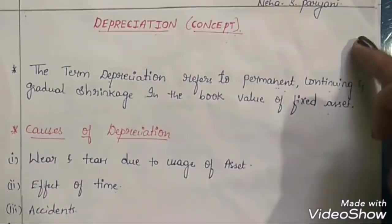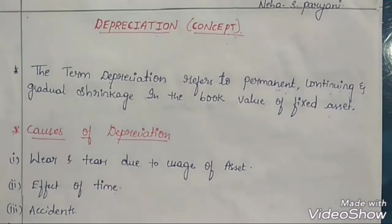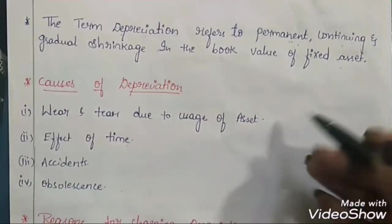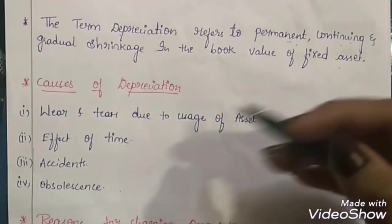Here we will discuss about depreciation. The question arises: what can be the causes for depreciation? The first is wear and tear due to usage of the asset. As we go on using the asset, there are many chances that the parts of the asset may get damaged, and due to that the value of the fixed asset will get reduced or depreciated.